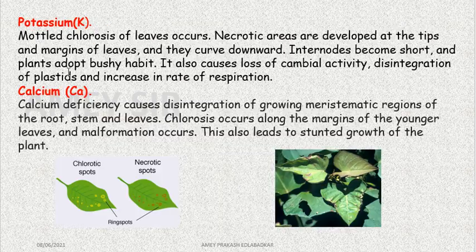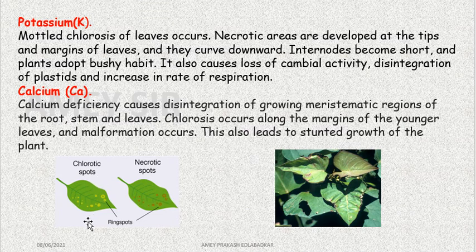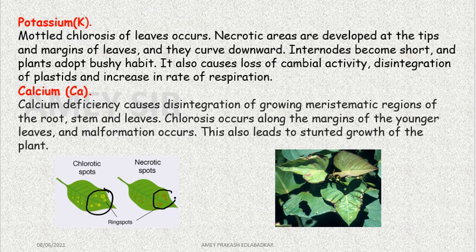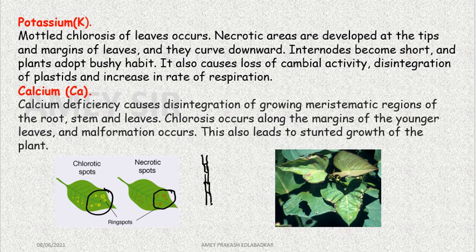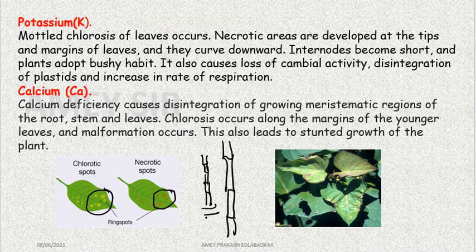Another important group of elements is potassium and calcium. Potassium deficiency causes mottled chlorosis — the leaf breaks down into pieces. Necrotic areas also increase. Spots develop — you can see these spots here — ring spots develop, and chlorotic spots appear. This dead tissue shows different colors in the necrotic areas: yellow and brown. Internodes become short, and the plant's growth becomes stunted. In the plant without deficiency, internodes are long; in the deficient plant, internodes become short.